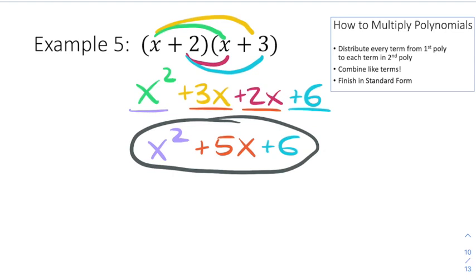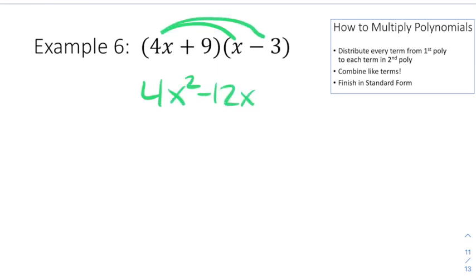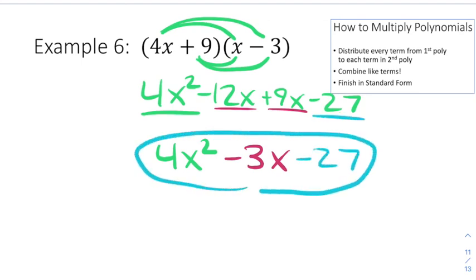As long as you go in degree order, your answer will be in standard form. My next problem is similar, just with bigger numbers. When you don't see anything between the parentheses, that means we're multiplying, and multiplying means distributing. So 4x times x gives 4x squared, 4x times negative 3 gives negative 12x, 9 times x gives plus 9x, and 9 times negative 3 gives negative 27. Combining like terms: 4x squared stays, negative 12x and 9x combine to give negative 3x, and negative 27 drops down.